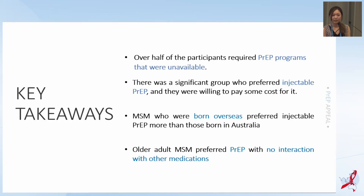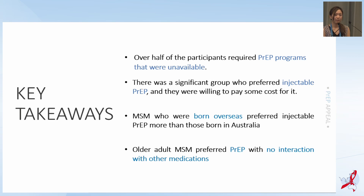Here are the key takeaways. First, there is a discrepancy between the demand for PrEP services and existing PrEP services — over half of participants preferred PrEP programs not currently available, such as long-acting oral PrEP or accessing PrEP through pharmacies. Second, there was a significant group who preferred injectable PrEP and were willing to pay some costs for it. Third, overseas-born MSM preferred injectable PrEP compared to those born in Australia. Lastly, older adult MSM prefer PrEP with no interactions with other medications.